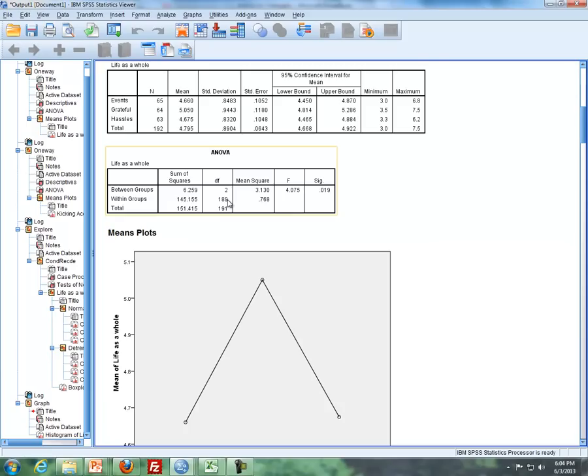My degrees of freedom, there's two different types of degrees of freedom. This is the between group or numerator degrees of freedom, and the within group or the denominator degrees of freedom, which is 189. Both of them need to be listed.